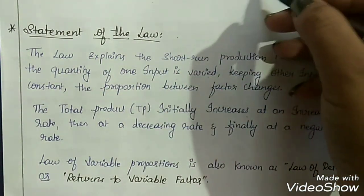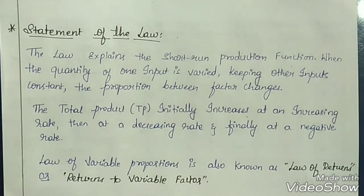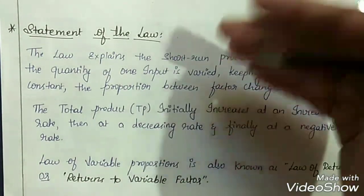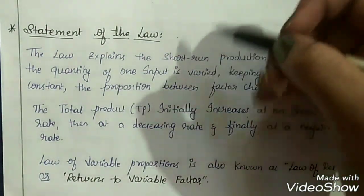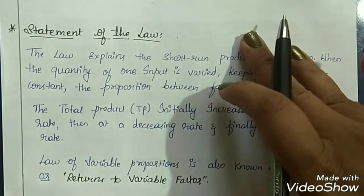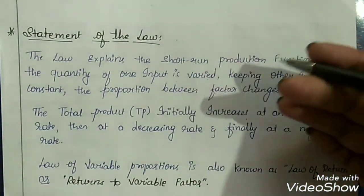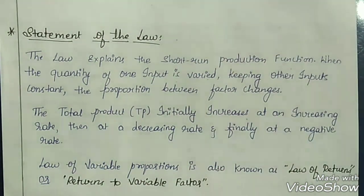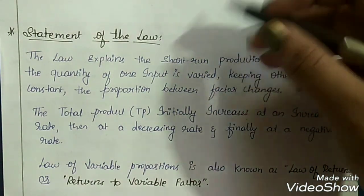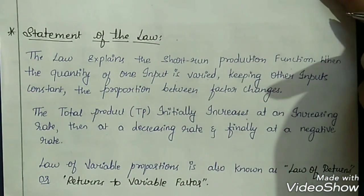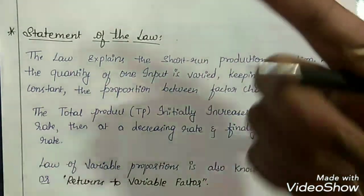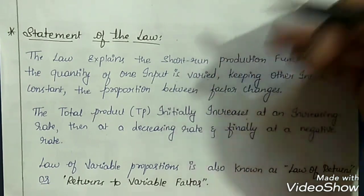Assume that we have one acre of land and we need to carry on agricultural activities on that piece of land. Here, land is fixed — only one acre — so this is our Fixed Factor of Production. The Variable Factor of Production is labor, the person who carries on the agricultural activities. For one acre, we can employ two or three labors. If we want to increase our output, we can increase the number of labors from three to five.